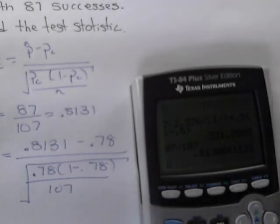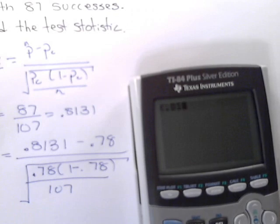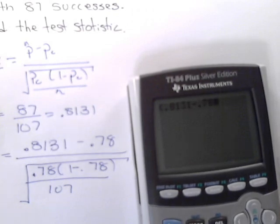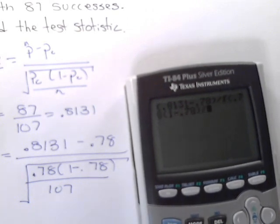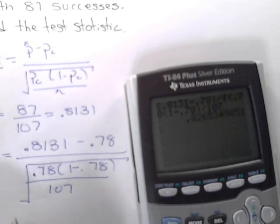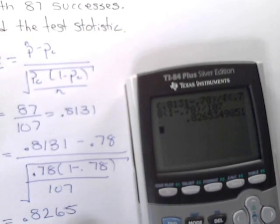Typing all of these values into the calculator, we first need to be sure that we put parentheses around the numerator, 0.8131 minus 0.78, and we're dividing that by the square root of 0.78 times 1 minus 0.78, divided by 107. So we have a test statistic of 0.8265, and that's a z value.